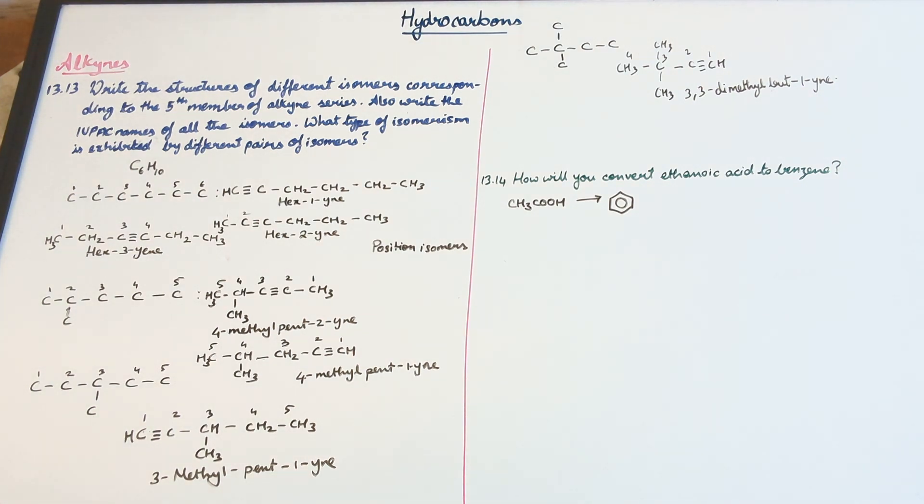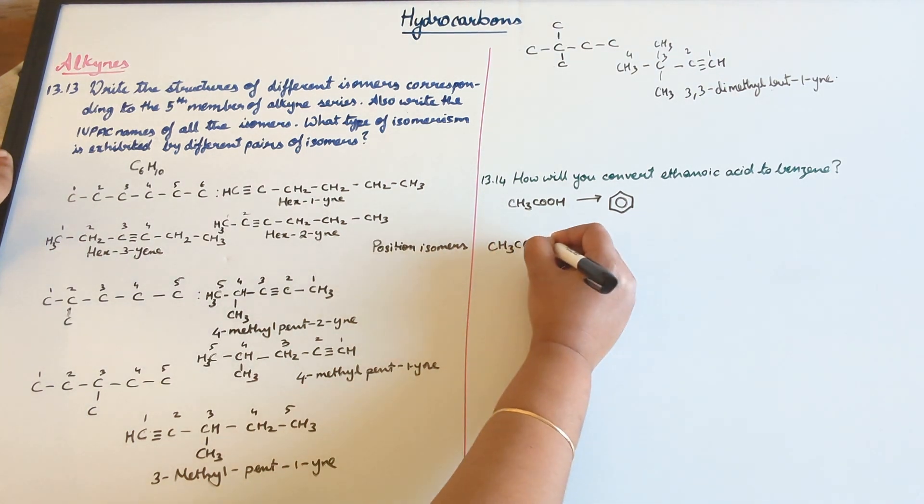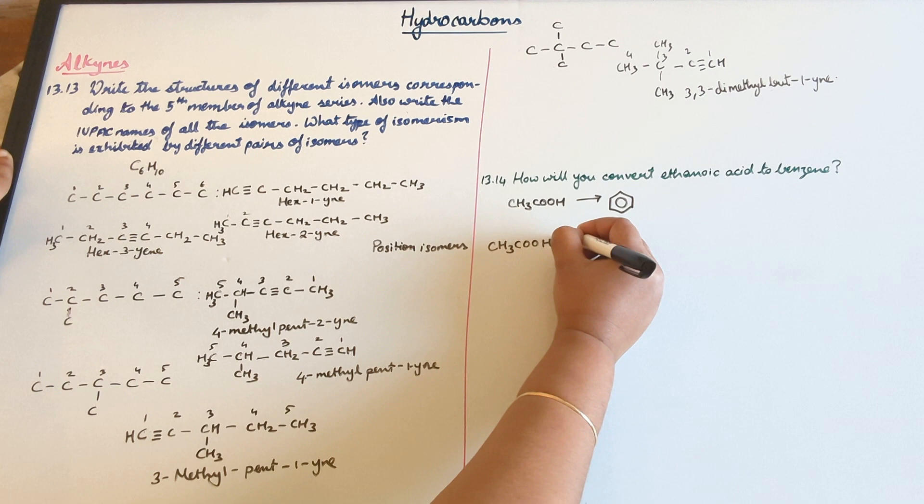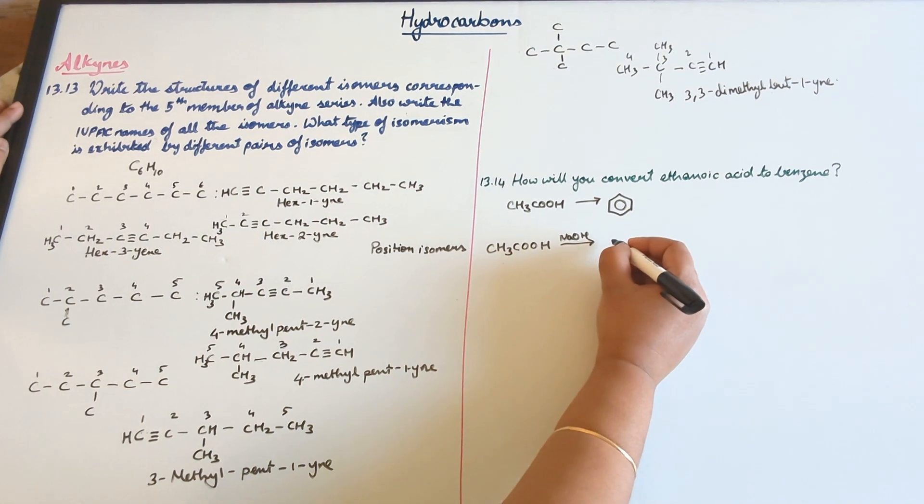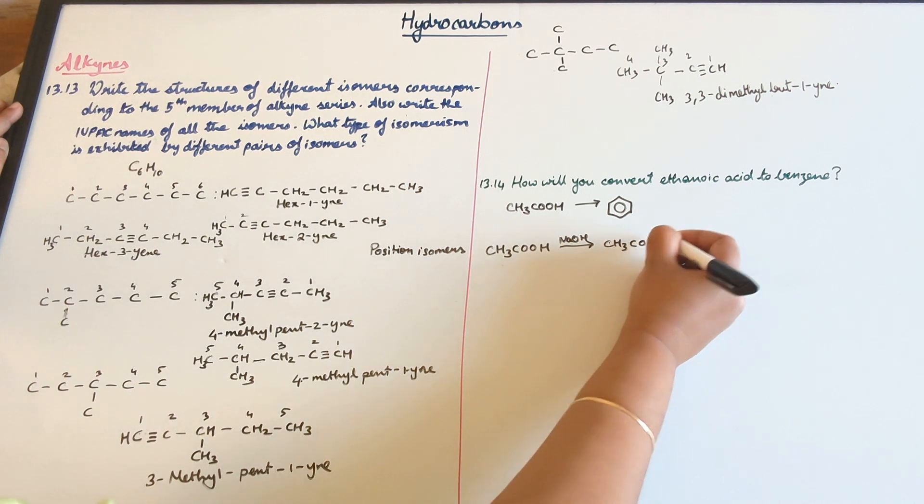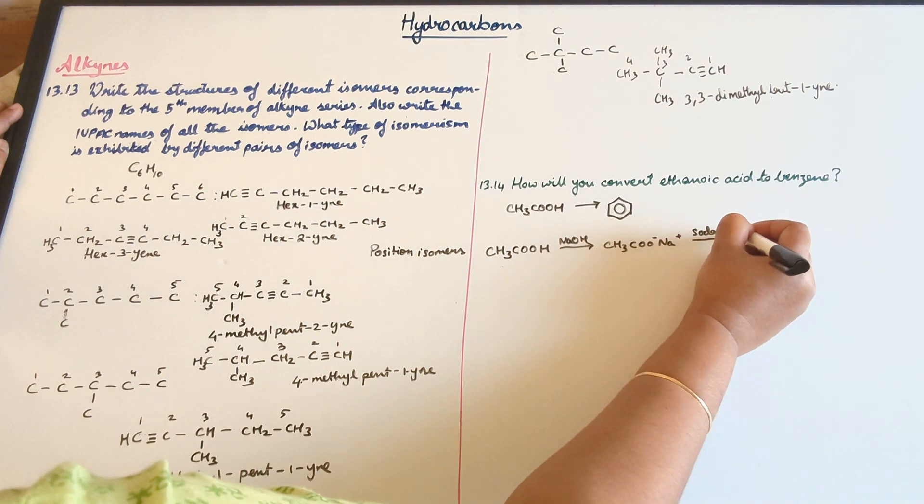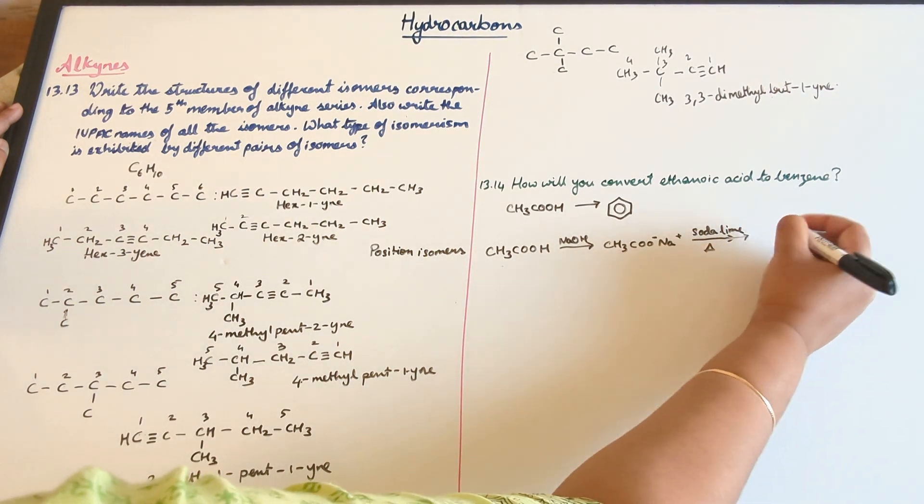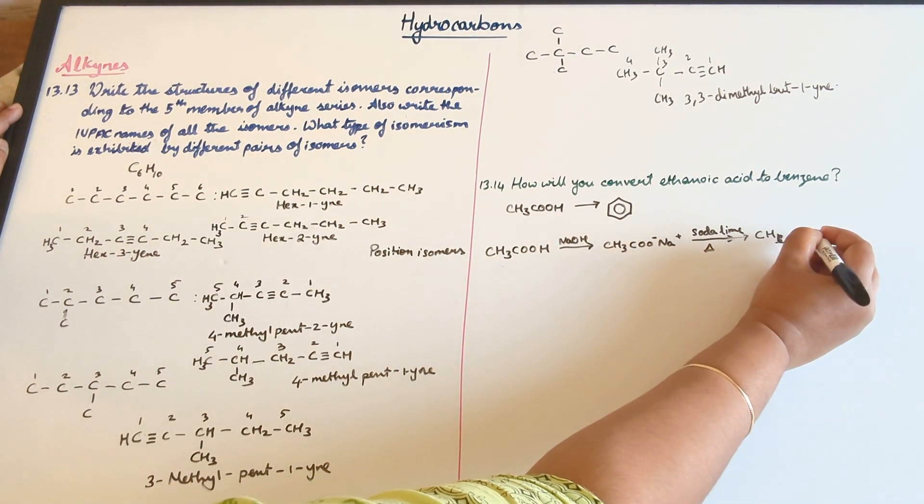So we'll be starting with ethanoic acid. So ethanoic acid, that is acetic acid, is going to react with NaOH and this leads to the formation of sodium salt of ethanoic acid. So CH3COONa+ is formed and this is undergoing a chemical reaction with soda lime and heating is going to give us an alkane. So that's methane which is formed.